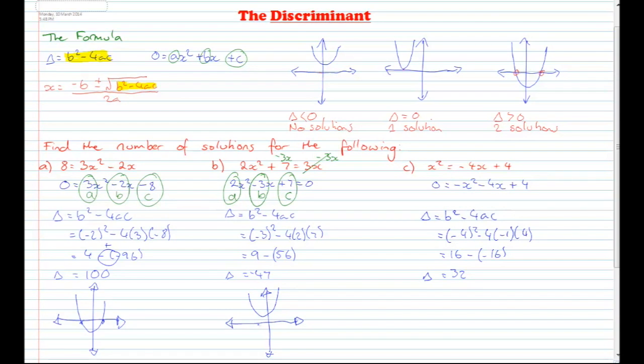Now for part c, we've got x squared equals negative 4x plus 4. So the very first thing we need to do is rearrange everything so we can get the x squared on its own. So you get 0 equals negative x squared minus 4x plus 4 when we subtract the x squared off both sides, leaving us with 0 on this side.